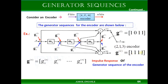So the generator sequence for output 2 can be written as all 1s: 1, 1, 1, 1. The first bit is for the current message bit — since it is 1, there exists a connection from the current message bit to the adder. The next three bits are for the memory units. You can also identify the number of memory units from the length of the generator sequence.